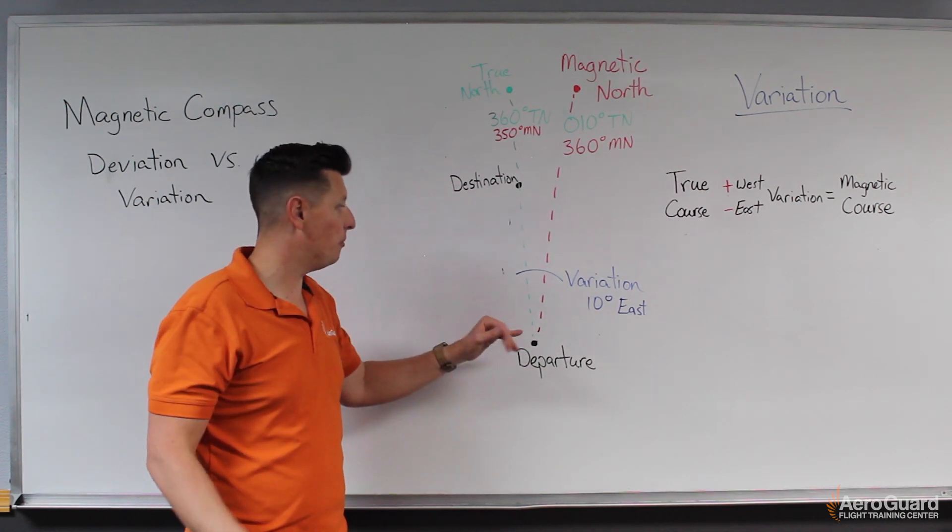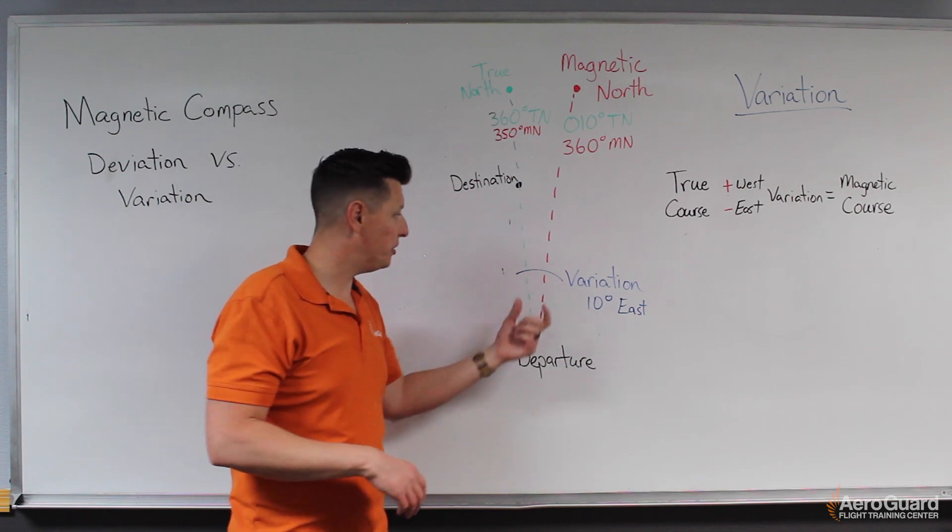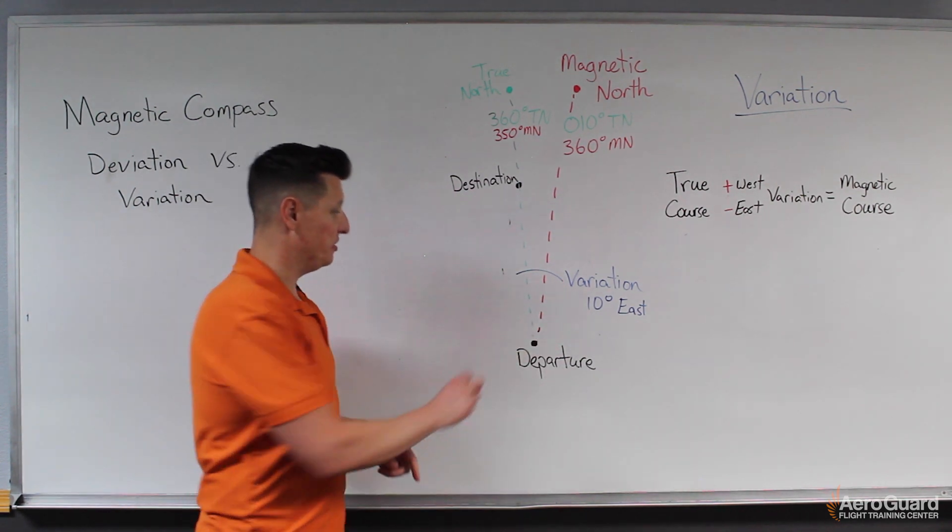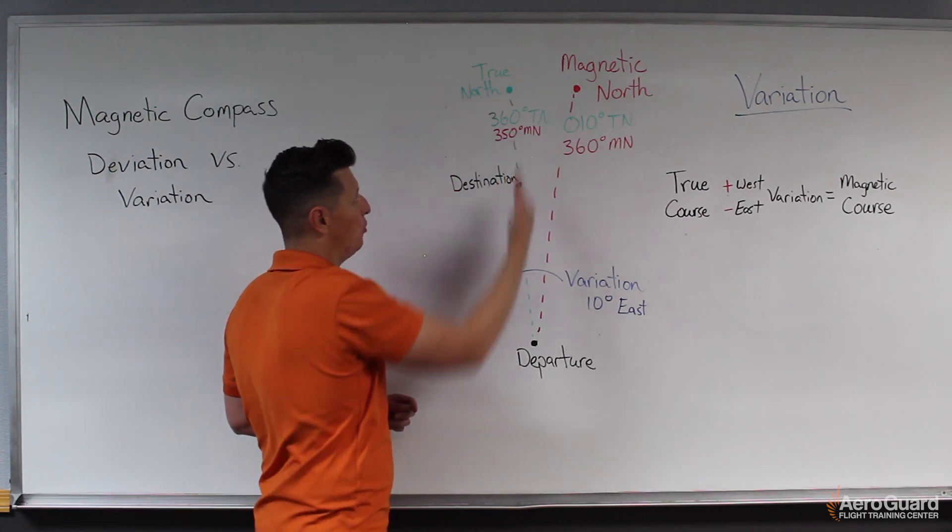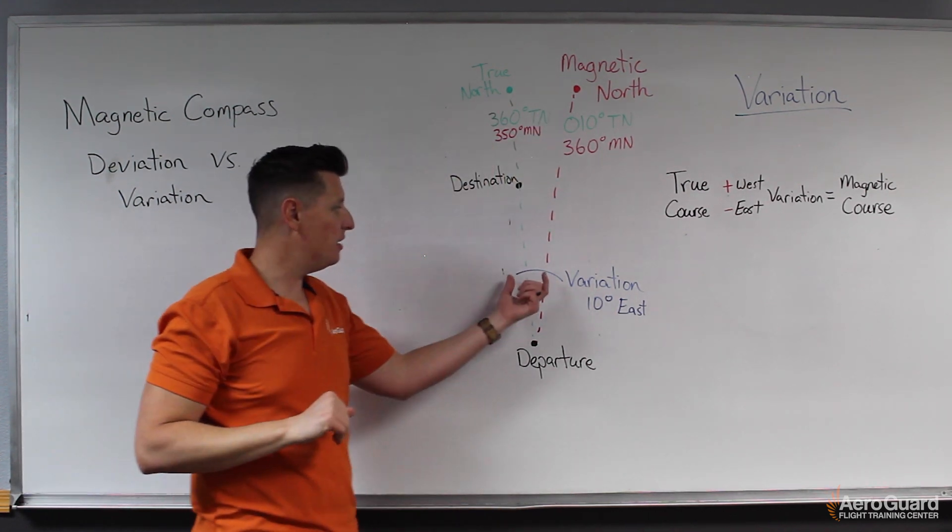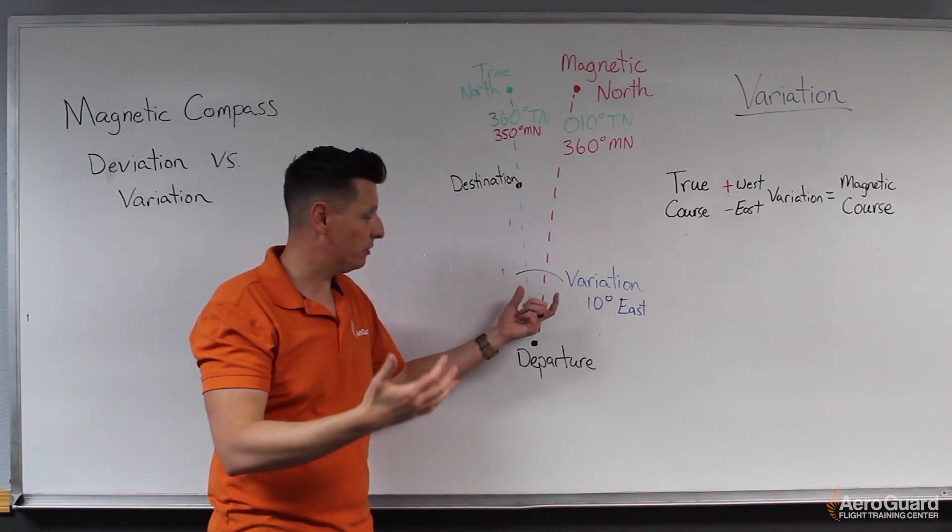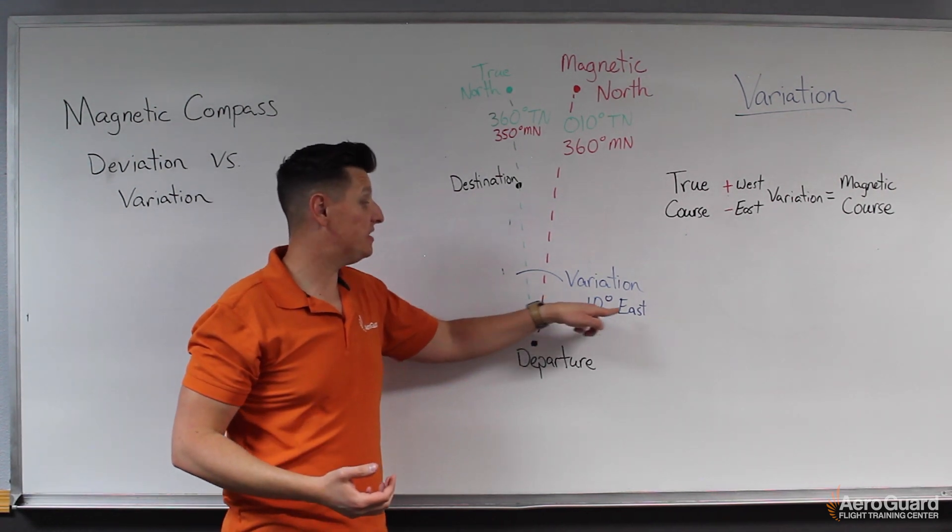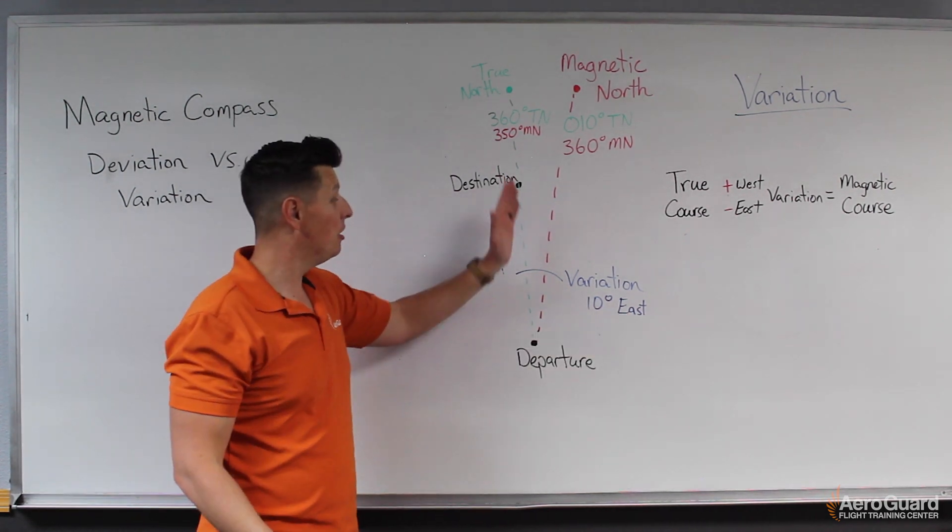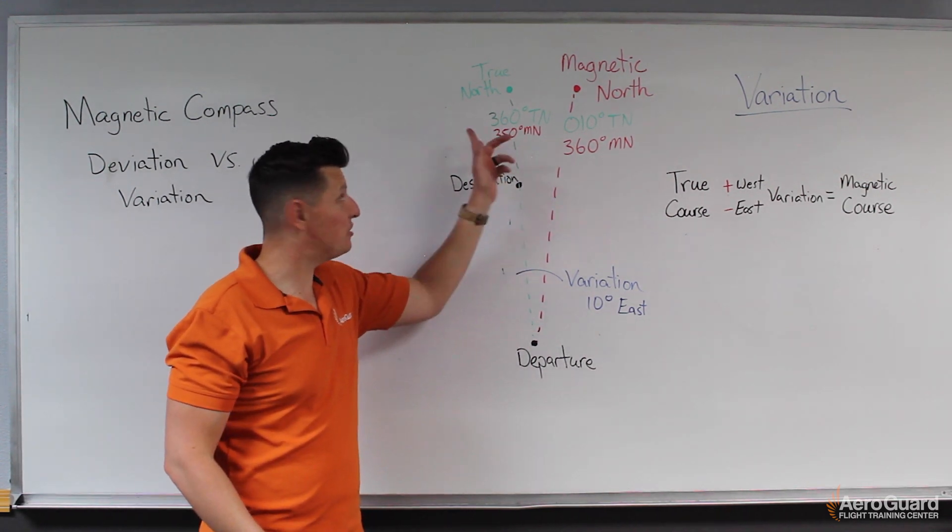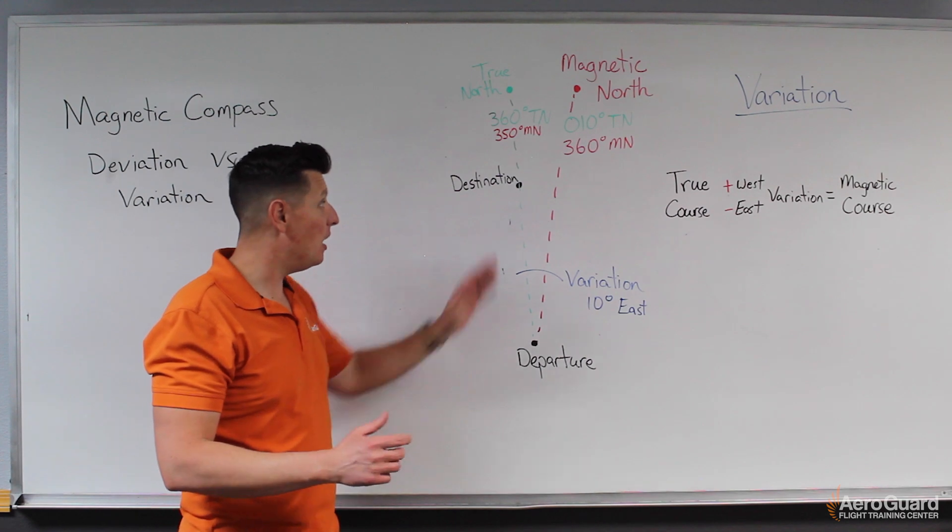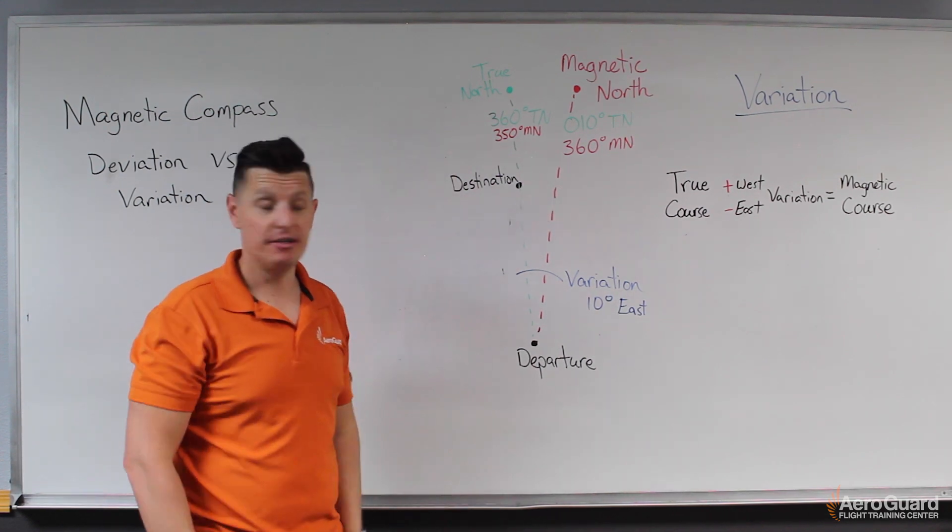So in this case, we could tell from the chart that our variation, let's say in this case, is 10 degrees. So the angle between our direct course to magnetic north versus true north is roughly 10 degrees in this particular example. We say that that would be 10 degrees east variation because from our point of view, magnetic north is east of true north. If it was the other way, then we'd call it west variation.